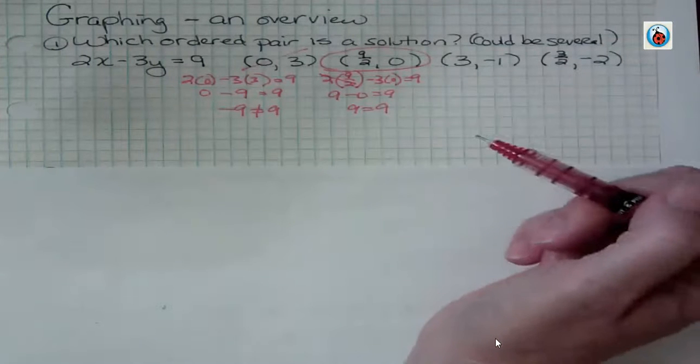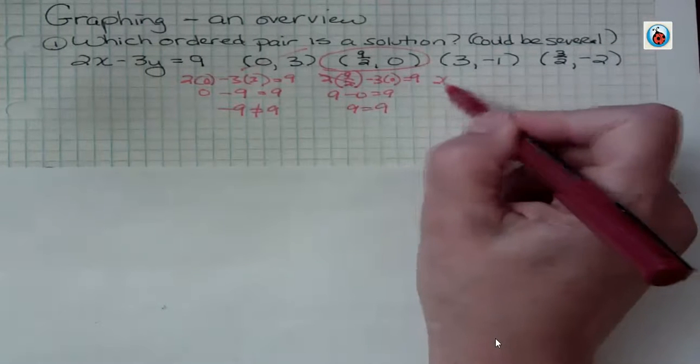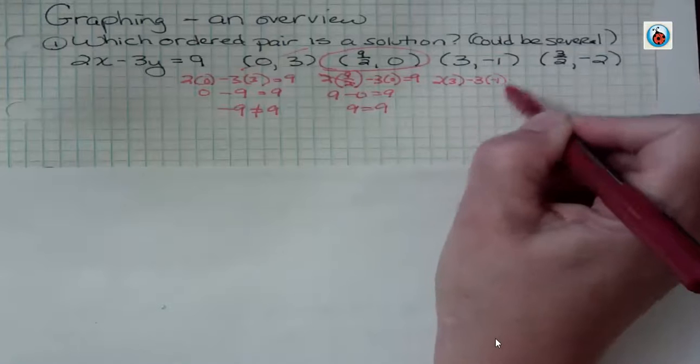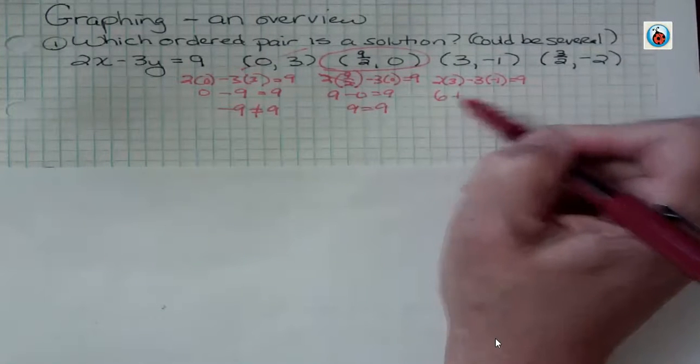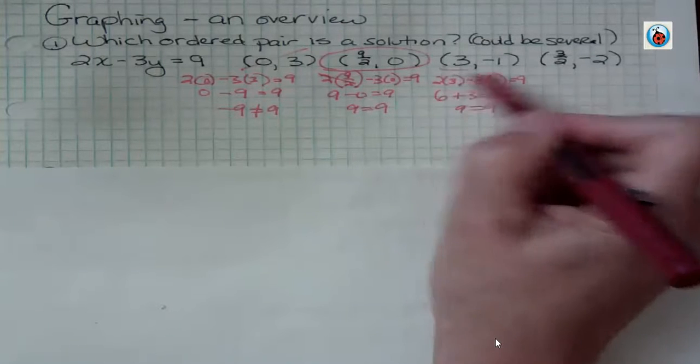Don't stop when you find a solution. Check them all. So 2 times 3 minus 3 times negative 1 is 9. Well, that 2 times 3 is 6, plus 3 is 9. 9 equals 9. That's also a solution.